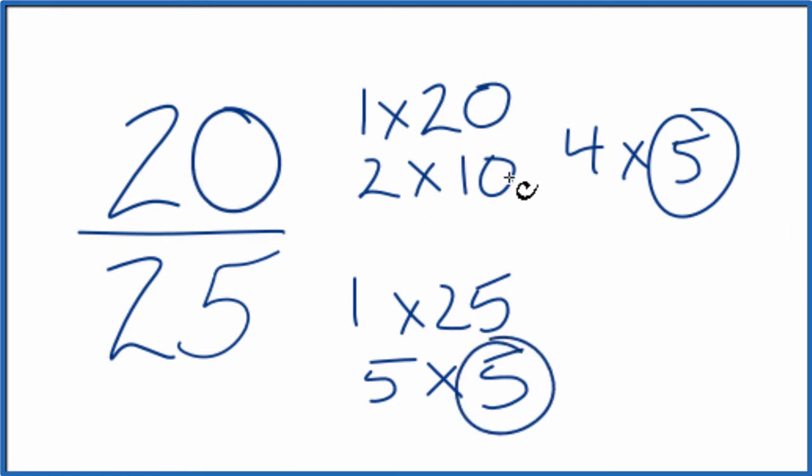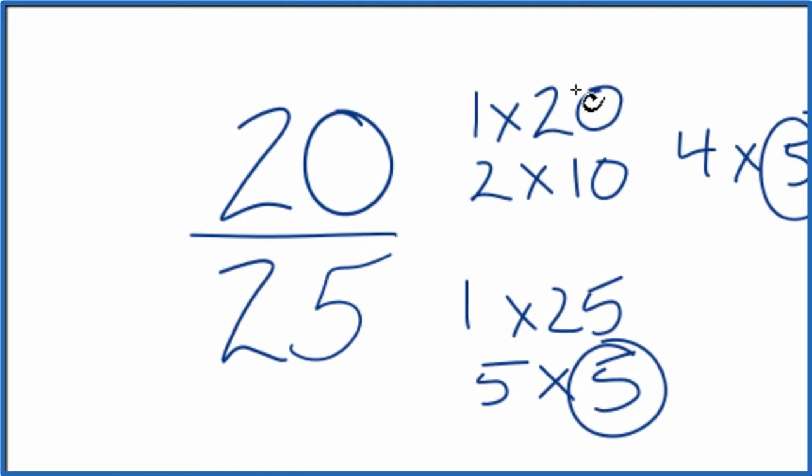So we can divide 20 by 5 and then 25 by 5. We'll have simplified the fraction 20/25. Let's move these over here.